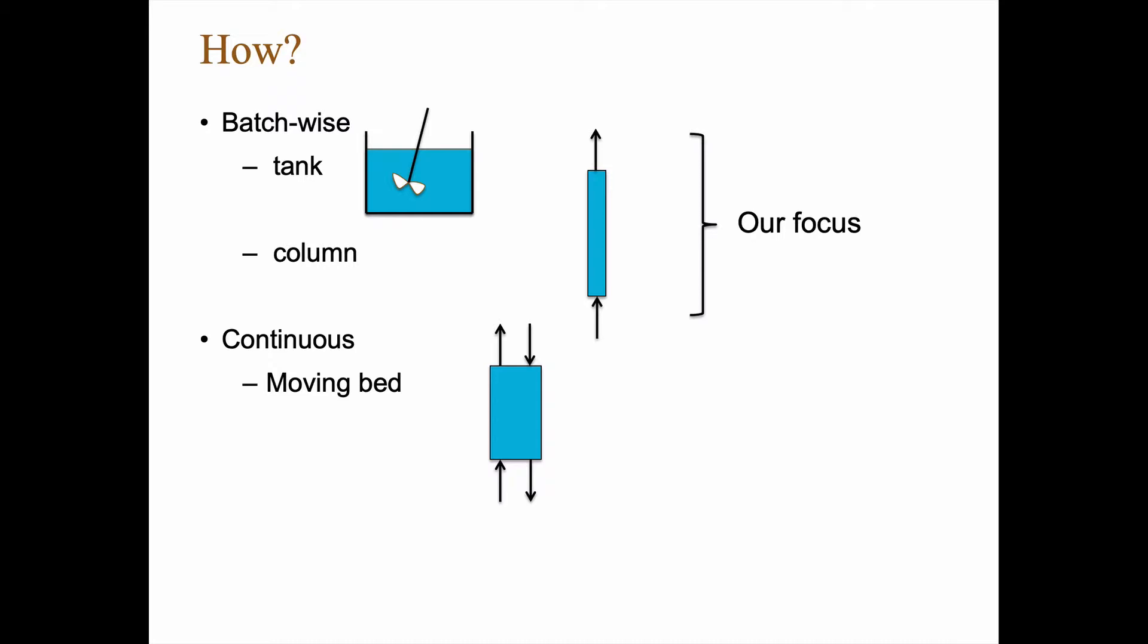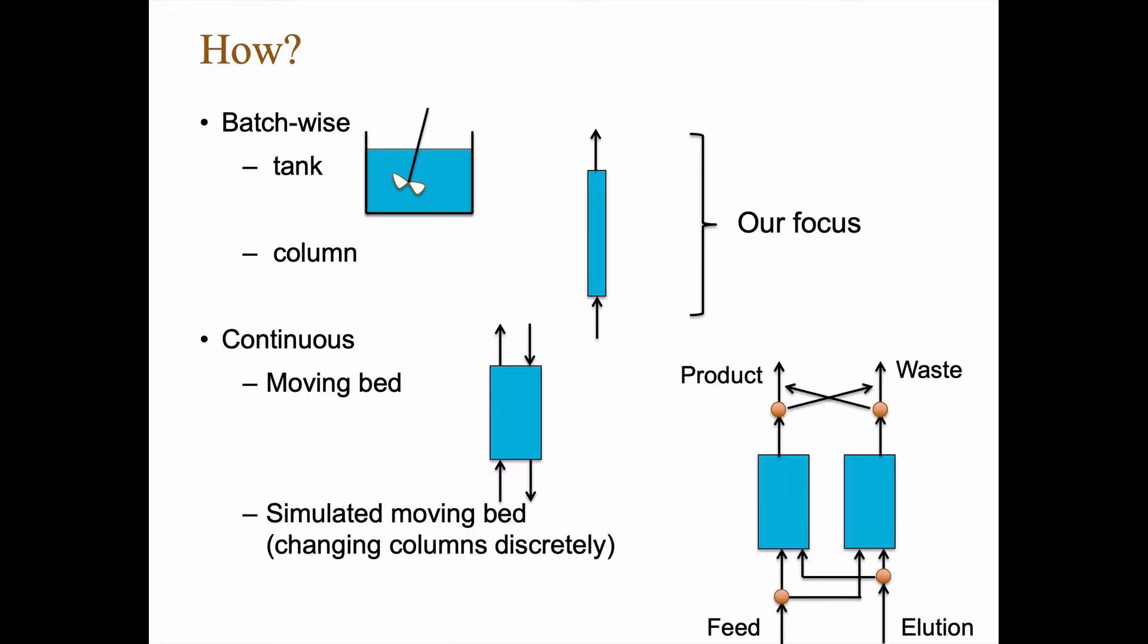This is, however, often tricky to get the solid material to move in a good way. So a way around that is to have a simulated moving bed where you have two or more columns. The more you have, the more similar to a real moving bed you get.